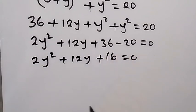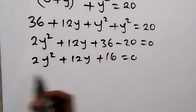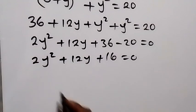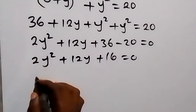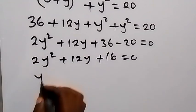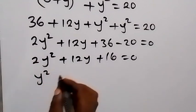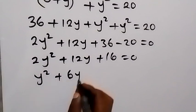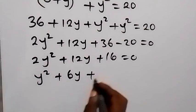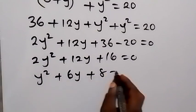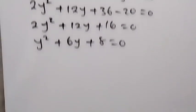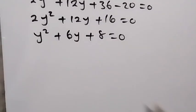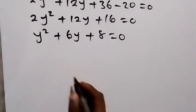We can divide through by 2, which gives us y squared plus 6y plus 8 equals 0. This is a quadratic equation which we can factorize.